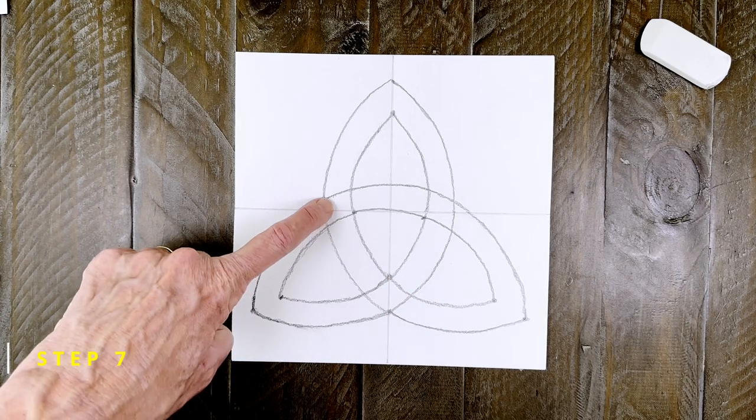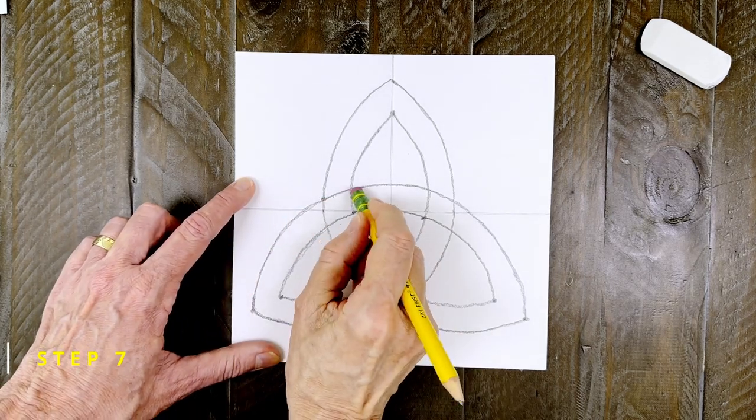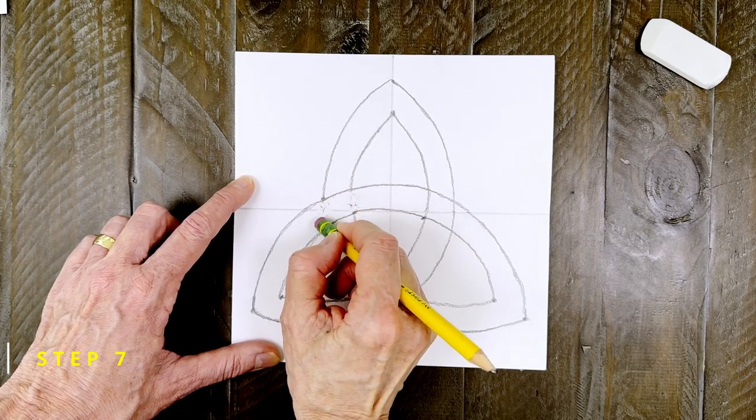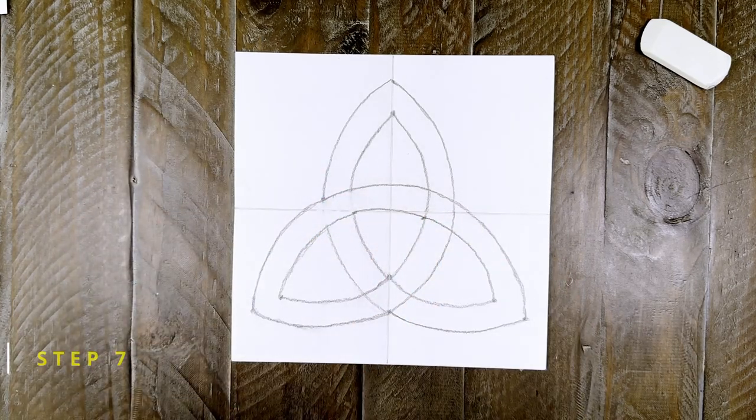Step number seven. Now is the fun part. Removing just some of the lines so the knot becomes a continuous loop. Erase two lines like I'm doing here.